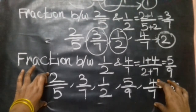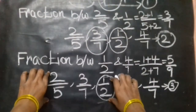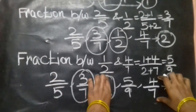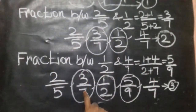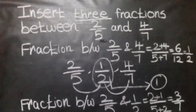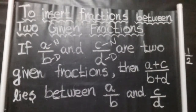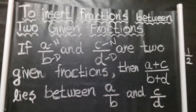So we found 1/2 first between 2/5 and 4/7, then found the two additional fractions on either side. In total, we inserted 3 fractions. The steps are very simple — once you practice a few times, you can solve it in seconds. General rule: to insert fractions between two given fractions, add numerators and add denominators. You can form indefinitely many fractions between two given fractions. Thank you so much for watching this video.